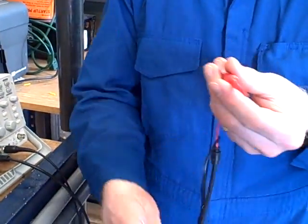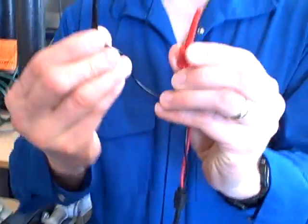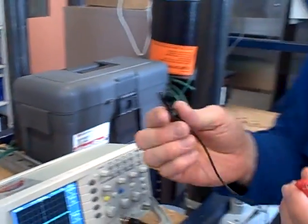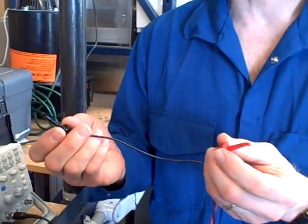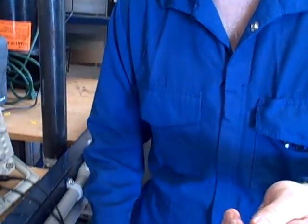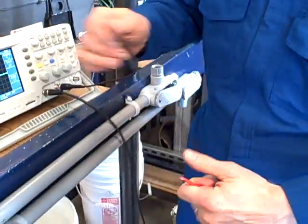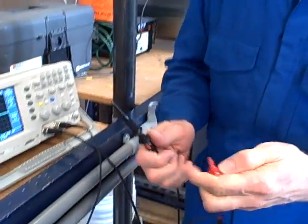If I simply took one channel here with my probe and ground and I went across the field bus, I would be grounding one of those field bus conductors. I do not want to do that. So I want to do a differential measurement as opposed to a ground referenced measurement.